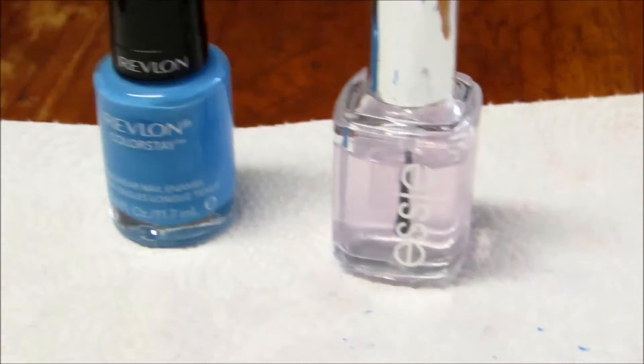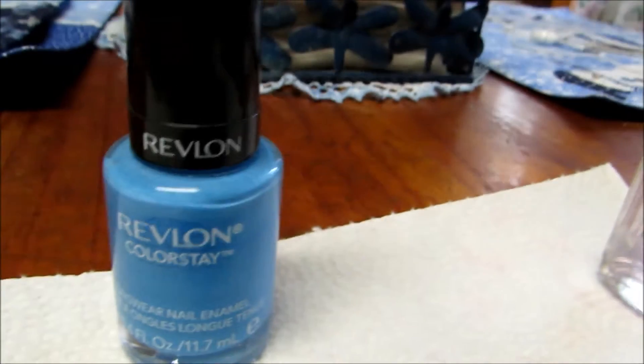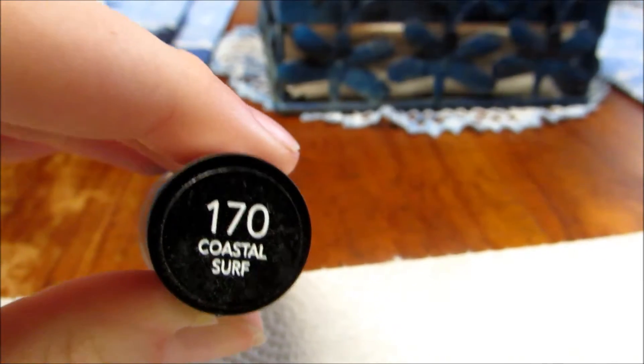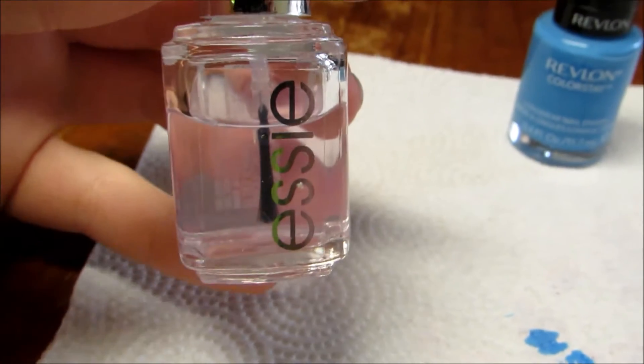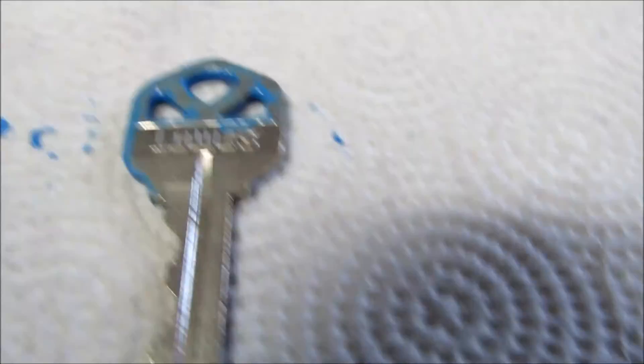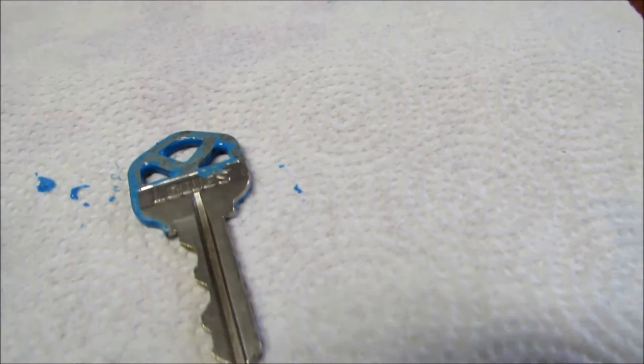So you'll need two nail polishes. The first one I used was Revlon in the shade Coastal Surf, and the second one I used was an Essie top coat called Good2Go. And of course you'll need a key and a napkin so you won't get the table messy.